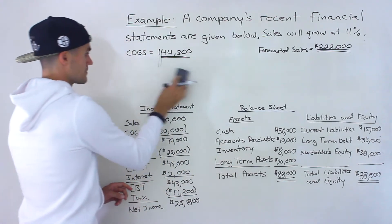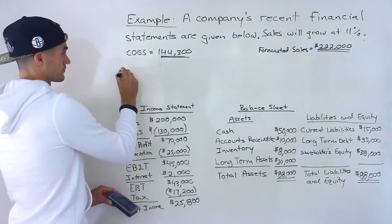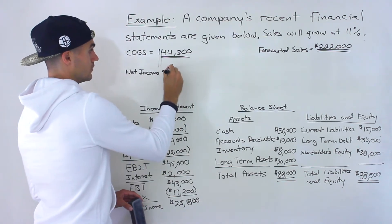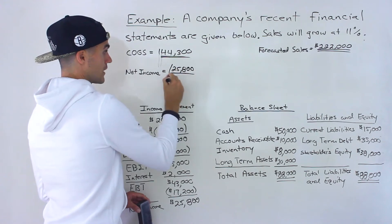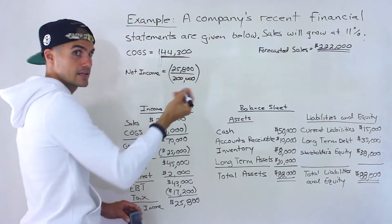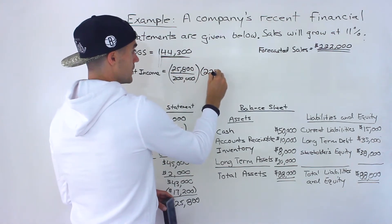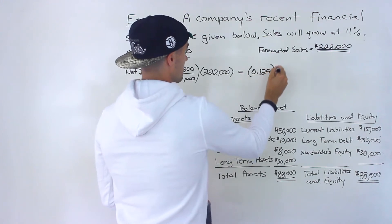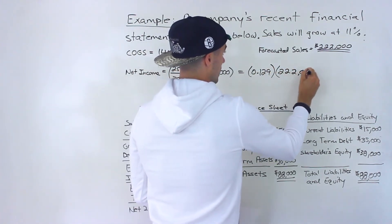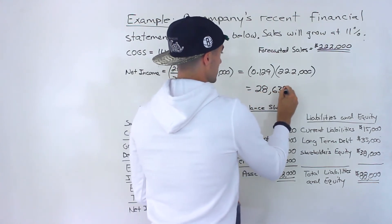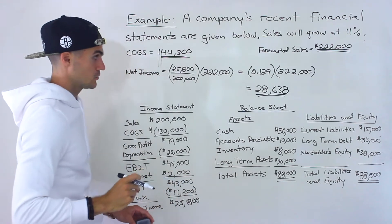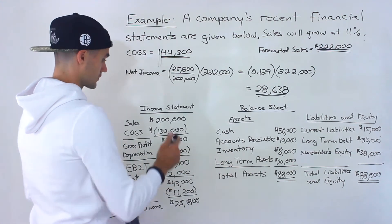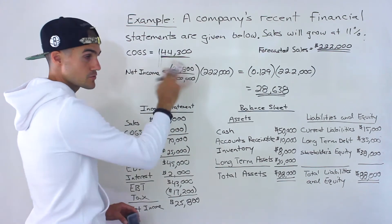Next item is net income. We go to the current financial statements: 25,800 divided by 200,000 gives us the percentage of sales that net income represents — that's 12.9%. Multiply by the forecasted sales and you'd end up with 28,638. To check your answer, you could just take the original net income or cost of goods sold and multiply by 1.11 — you should get those respective amounts.